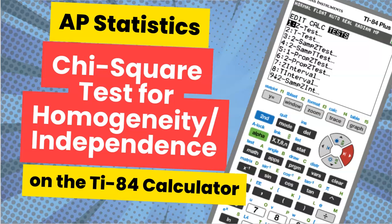What's up my stat stars? In this video I'm going to be walking you through how to do a chi-square test for homogeneity or independence. Now the two different tests are performed exactly the same, but it's really about what the question is asking and how the samples are organized. In this video I'm going to be doing a test for homogeneity, but if you do have a test for independence, what I'm going to show you to do on the TI-84 calculator is exactly the same.